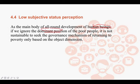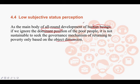The next area is 'low subjective status perception.' As human beings are the main body of all-around development, ignoring the dominant position of poor people makes poverty governance unsustainable. Human beings are at the center of the problem, and therefore what the government needs to do is change human behaviors and thoughts, since people in poverty hold the dominant position in solving this issue.